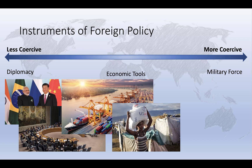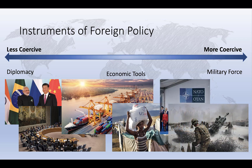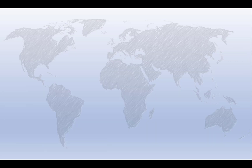And finally, states can also rely on a variety of military options. Again, these can exist on a continuum from mutual security agreements or blockades, which rely mostly on the threat of military force but not necessarily its use, all the way to the direct use of military force in a variety of forms, which is perhaps the most coercive instrument of foreign policy. We'll consider each of these sets of options in subsequent videos, but that's it for now. Thanks for watching.